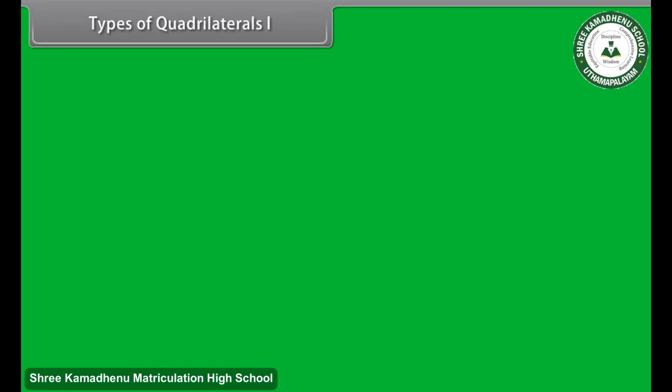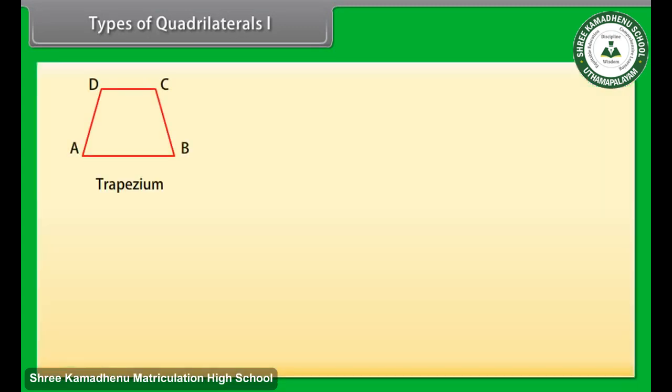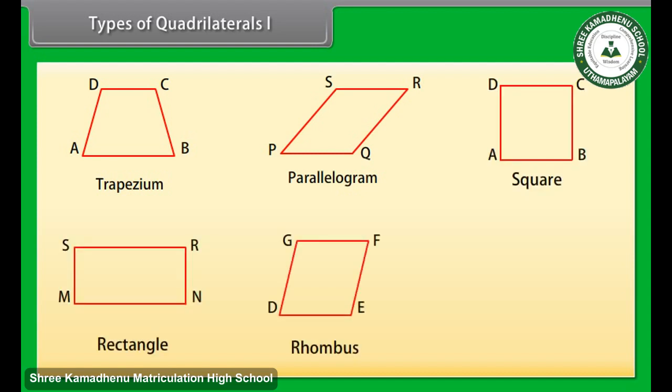Types of quadrilaterals. There are different types of quadrilaterals: trapezium, parallelogram, square, rectangle, rhombus, and kite.